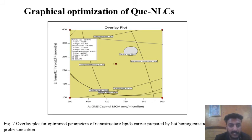We got two optimal values: X1, GMS to capryol, is 900 mg, and X2, Tween 82 to transcutol, is 336.571. On the basis of these values, we prepared the formulation.